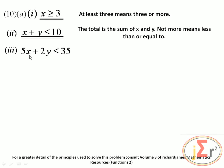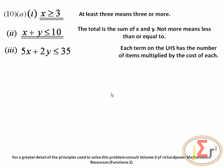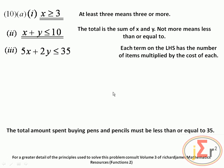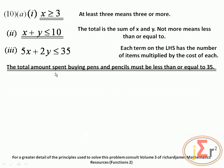Each pen costs $5 and each pencil costs $2. Each term on the left-hand side has the number of items multiplied by its cost, so the expression represents the overall cost. In words: the total amount spent buying pens and pencils must be less than or equal to $35.